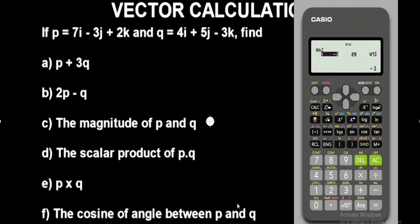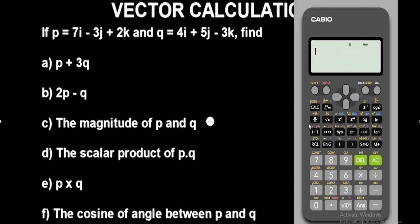Lastly, for the cosine of the angle between vector P and Q, pay attention here. The formula I'm going to apply is: cos θ equals the dot product of the vectors divided by the product of the magnitudes of the vectors. To do it on the calculator, let's remove this from vector mode. Press Shift and Mode, then press 3 to exit vector mode. Now in the fraction, the dot product we got was 47, and the magnitude of vector P was 7.87.